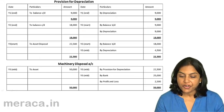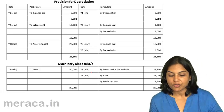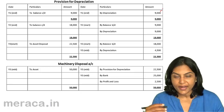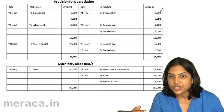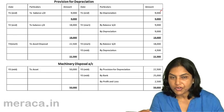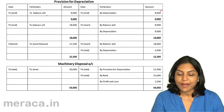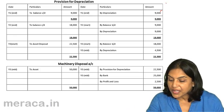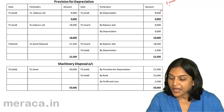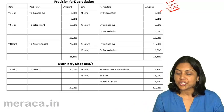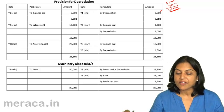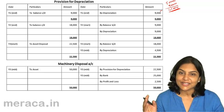Looking at the provision for depreciation account: at the end of year 1, depreciation of 9,000 is credited — since the entry is depreciation account debit to provision for depreciation account, the provision for depreciation account is credited, giving a balance of 9,000 carried forward. At year 1 end, we have 50,000 machinery and 9,000 provision for depreciation. In the balance sheet, it is shown as machinery 50,000 less provision for depreciation 9,000, giving a written down value of 41,000. In year 2, we charge depreciation again for 9,000 so the closing balance becomes 18,000.